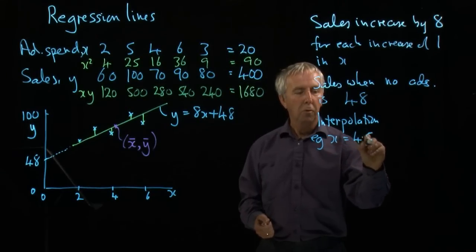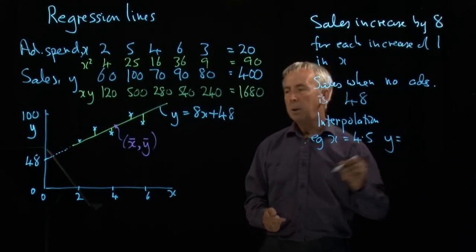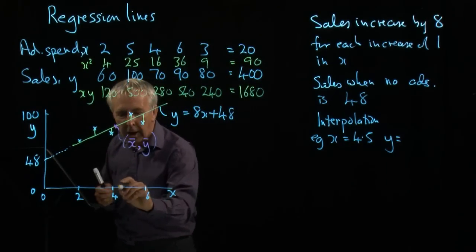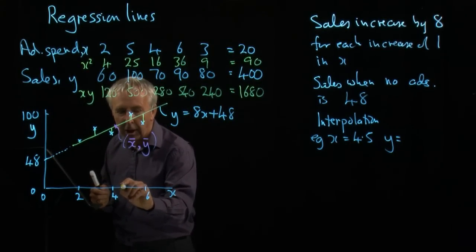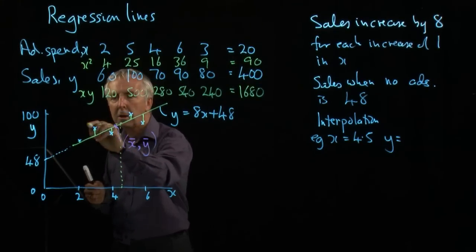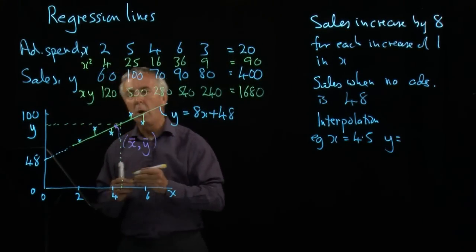We might say, what are the sales if I spend £4,500 on advertising? So what happens if x equals £4,500? I can predict, if I look at my graph, 4½ is somewhere like here. So what I'm going to do is work out what my line says the corresponding value of y should be.